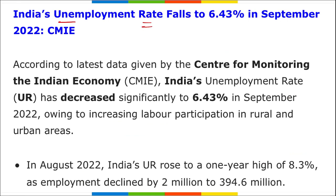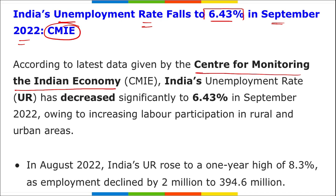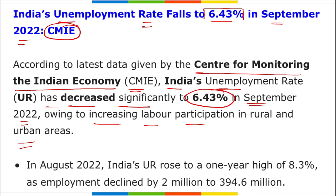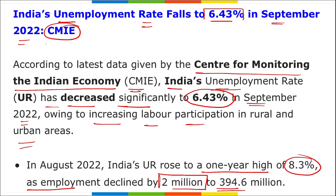Second news: India's unemployment rate has fallen to 6.43% in September 2022, as per data released by CMIE — the Centre for Monitoring the Indian Economy. This significant decrease is owing to increasing labour participation in both rural and urban areas. Earlier, the rate had risen to a one-year high of 8.3% as employment declined by 2 million to 394.6 million people.